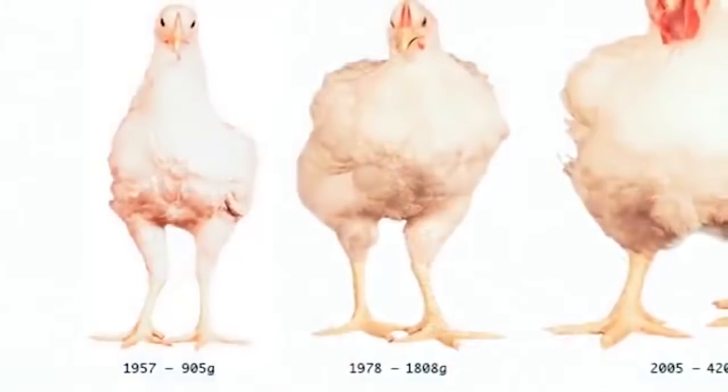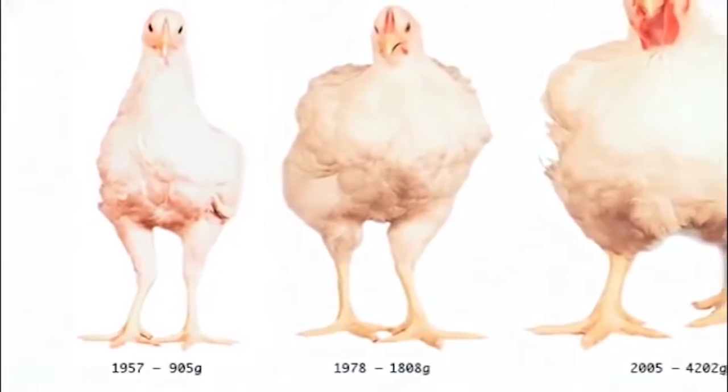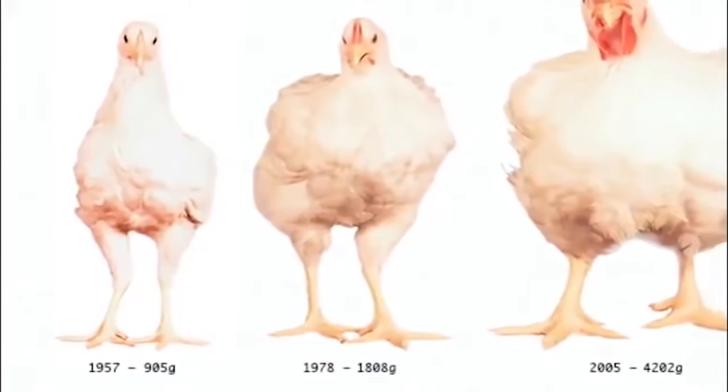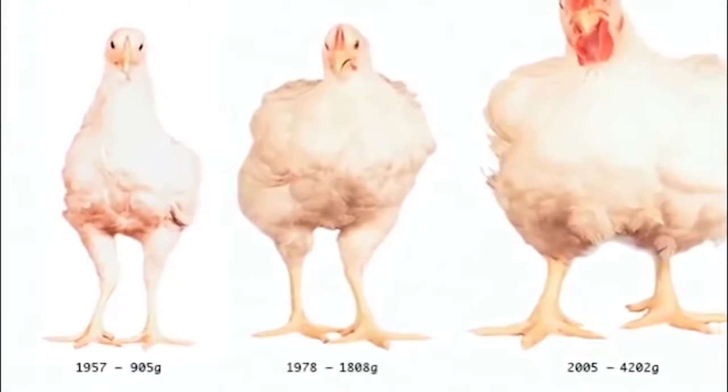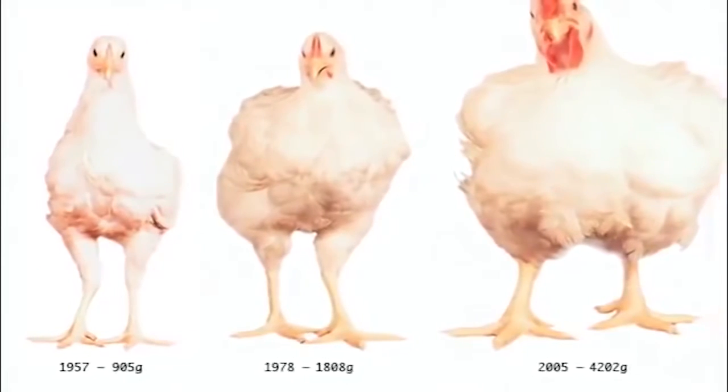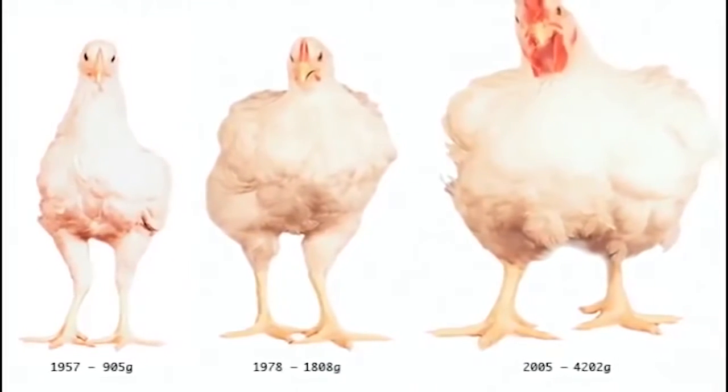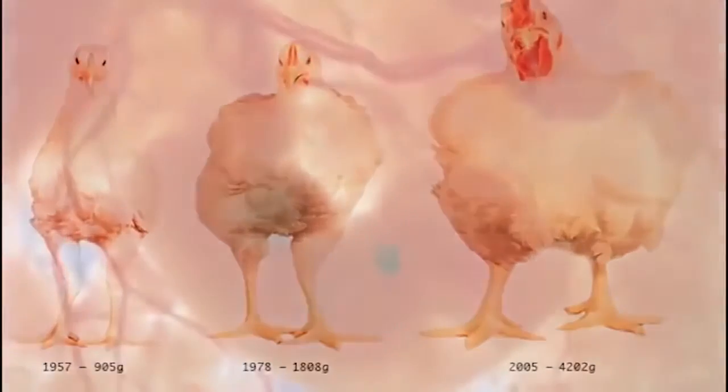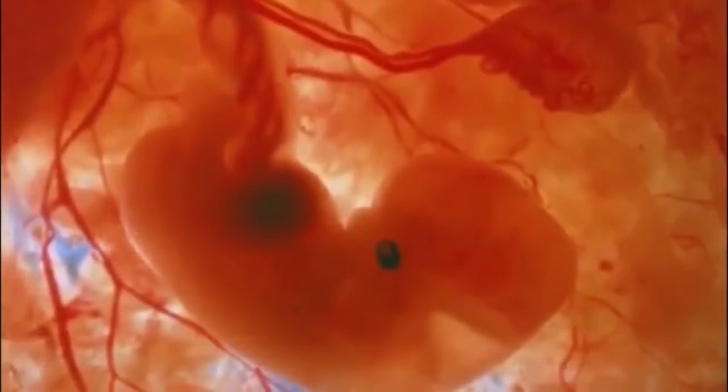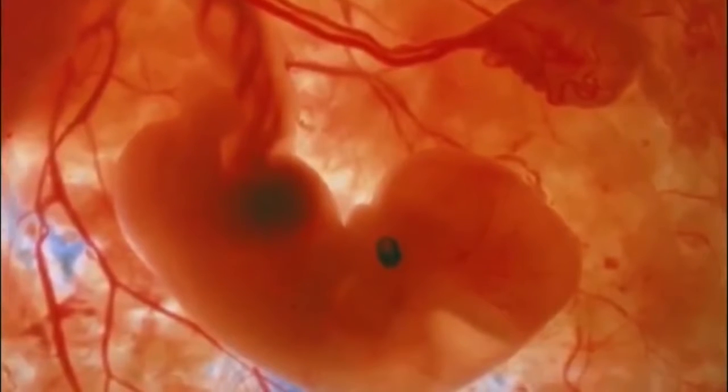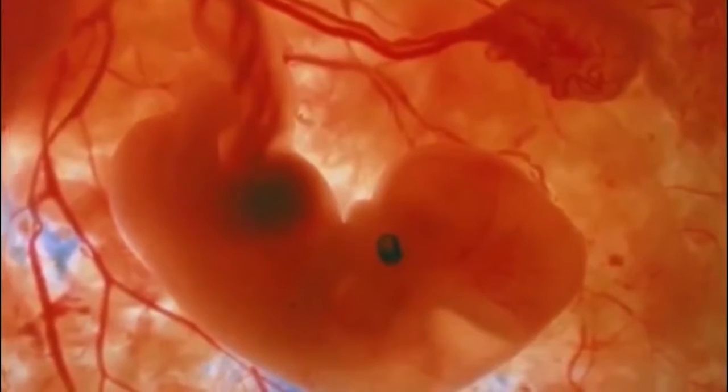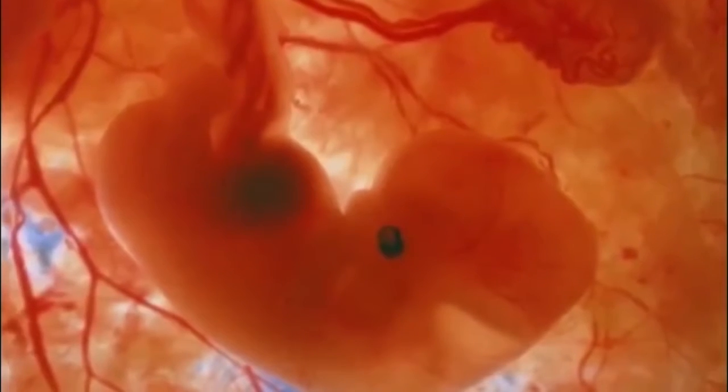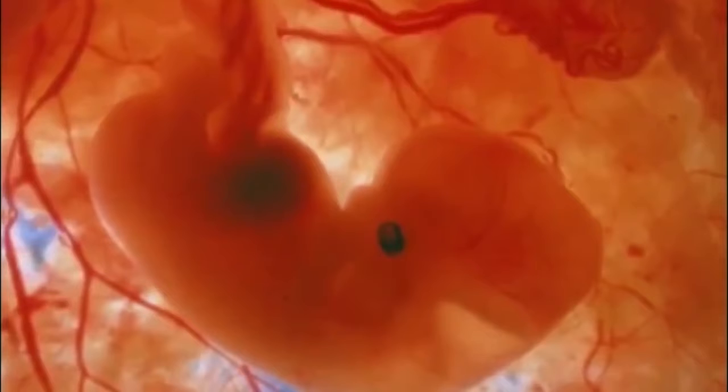He's an evolutionary biologist at Rice University and a professor in the Department of Biosciences. He's written a great book, I highly recommend it. It's called Future Humans Inside the Science of Our Continuing Evolution. So does evolution have a direction? Where is Homo sapiens going into the future?